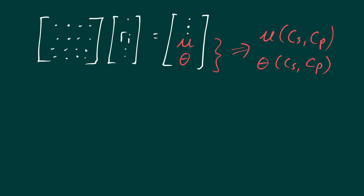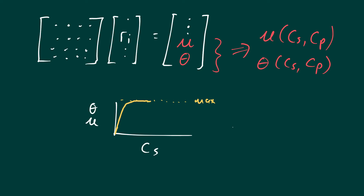If we look at the effect of substrate on theta or mu, we typically define a maximum achievable value, and then we have deviation from the maximum where values go smaller. At very small concentrations we have the Monod region, then we operate at the maximum, and at very high substrate concentrations we start deviating from the maximum. This first part only happens at very small concentrations, so it wasn't really drawn correctly here.